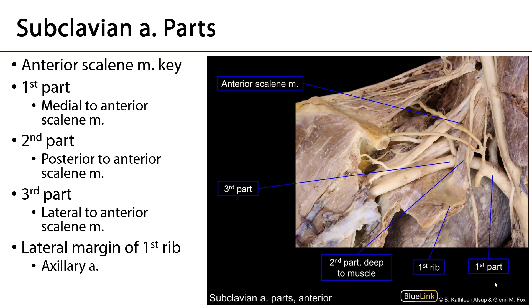Let's begin by looking at this right root of the neck image — an anterior view. The subclavian vein has been cut away, which allows us to see the inferior attachment site for the anterior scalene muscle. The anterior scalene muscle is an excellent reference point for the root of the neck, especially with respect to the subclavian artery.